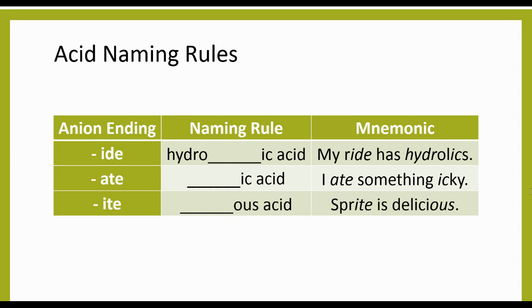Let's look at the three different naming rules we have. The first one is for anions ending in -ide. The naming rule we use is hydro, the blank spot where we put the stem in, ic acid. There's actually some really helpful mnemonic devices. For anions ending in -ide, the mnemonic is 'my ride has hydraulics.' An example of this would be chloride, so it'd be hydrochloric acid, which is something we've worked with a lot this year already.